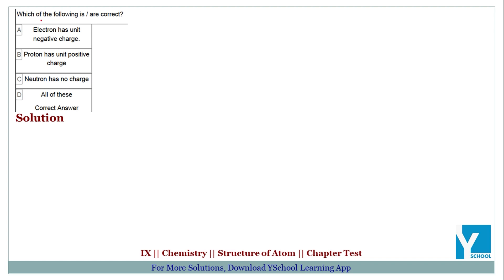The question asks which of the following are correct. The electron has a negative one charge — correct. The proton has a positive one charge — correct. The neutron has no charge — correct. All of these options are correct: electron is minus one charge, proton is plus one charge, and neutron is zero charge. All options are correct.